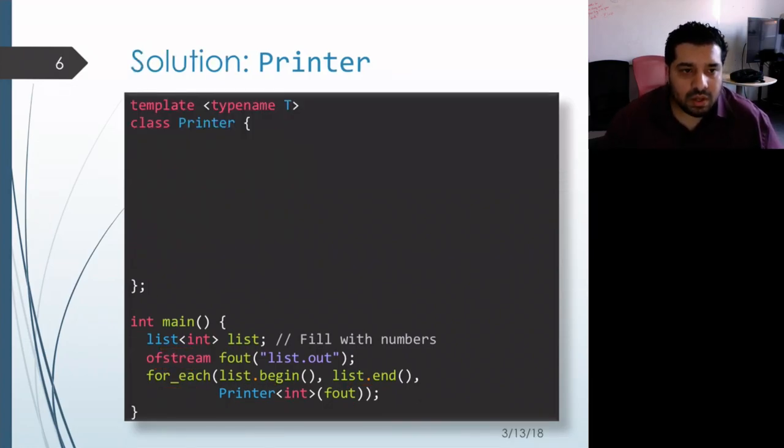Okay, so what we need to do is keep around this stream that we're using, because we actually only construct the printer object once when foreach is called, and then foreach applies that functor to each of the items. So the functor itself needs to keep track of which output stream it's using. That means we need a member variable that keeps track of the output stream.